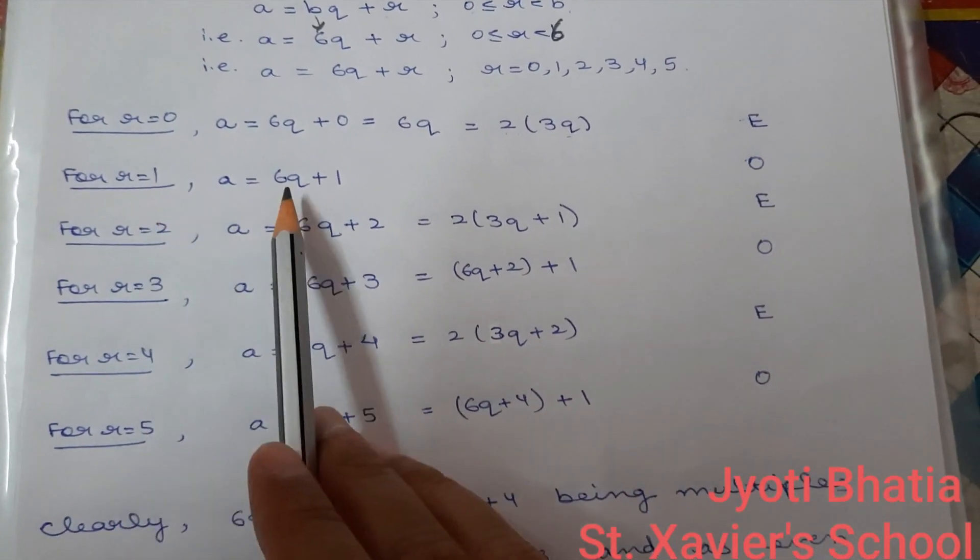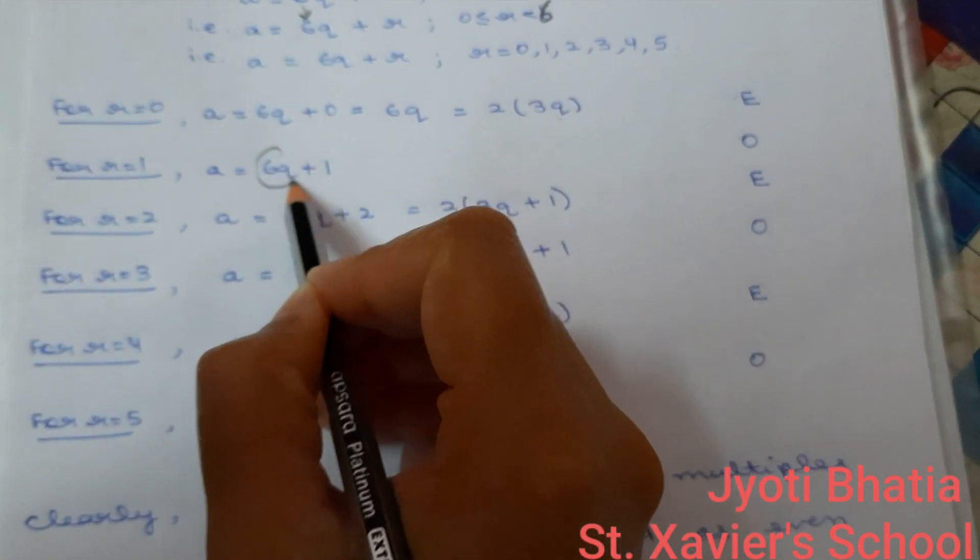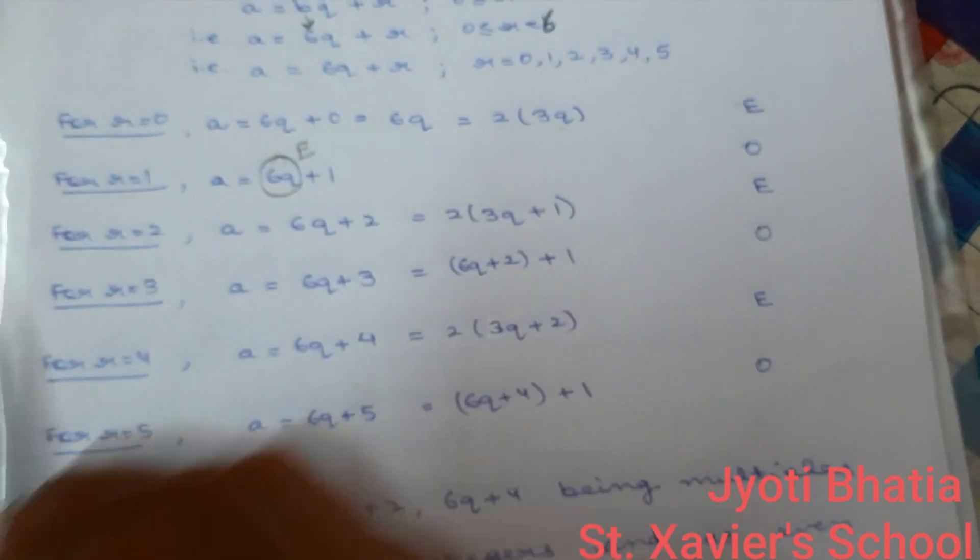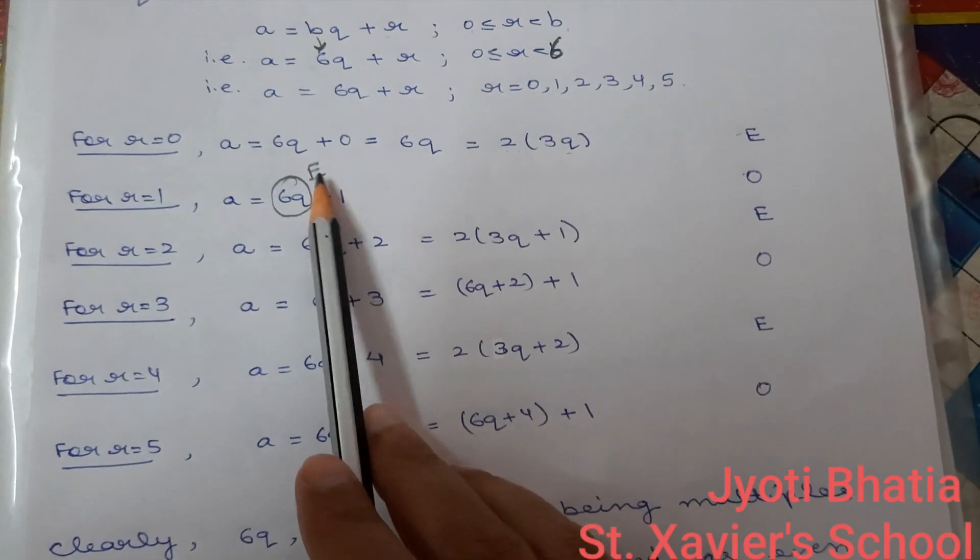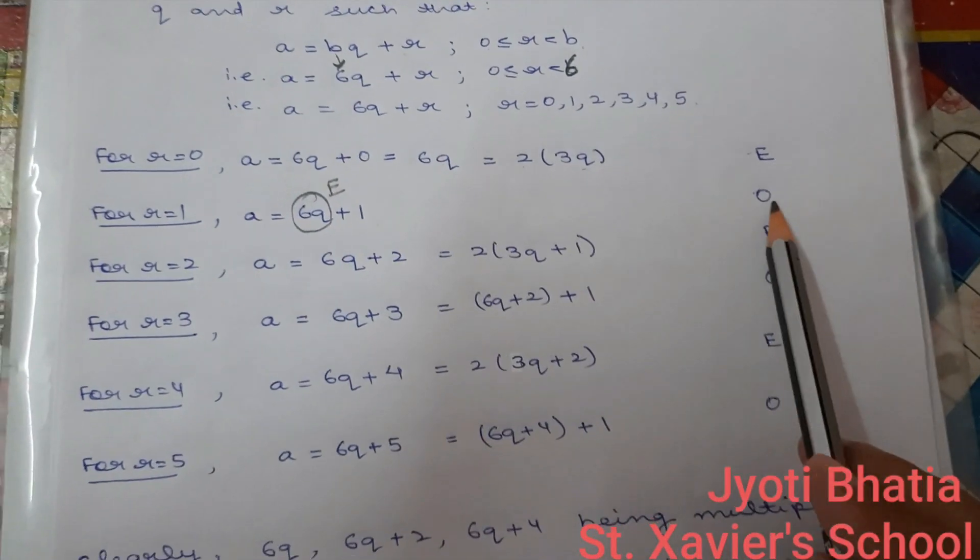For R equal to 1, A is equal to 6q plus 1. We have just shown that 6q is an even number. Right? An even number plus 1 gives us odd number.